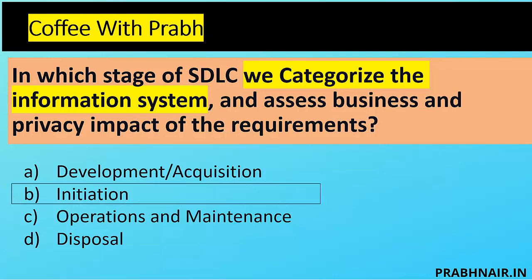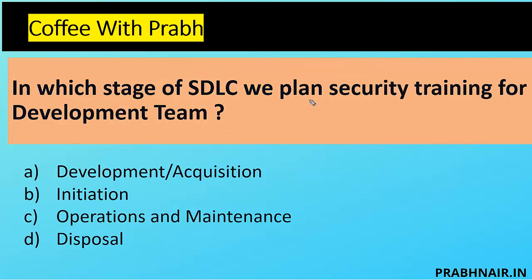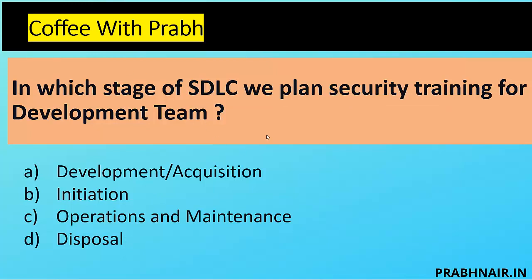Next question: In which stage of SDLC do we plan security training for the development team? Option D — Disposal — is definitely removed. Operation/Maintenance is after rollout to production, so C is removed. In Development we need to train them, but planning must be done during Initiation — we prepare the course outline according to the project. The answer is B — Initiation — because we train developers on the project and provide secure code review sessions.